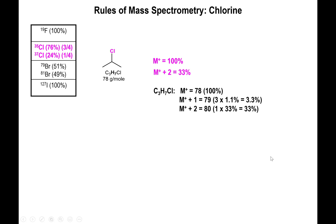For a molecule with three carbons, seven hydrogens, and one chlorine, the molecular mass is 78 — that's 100% M+. The M+1 peak is at 79, and M+2 is at 80. For the percentages: M+1 is all about carbon — three carbons × 1.1% = 3.3%. M+2 is all about chlorine — one chlorine × 33% = 33%.